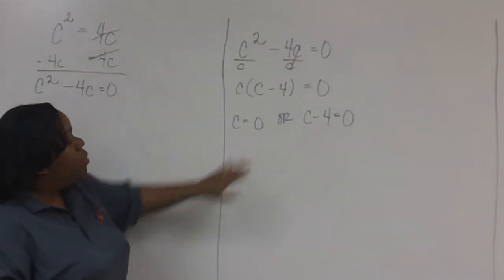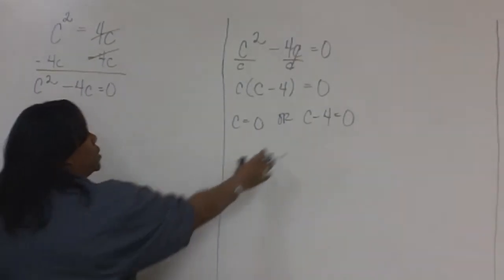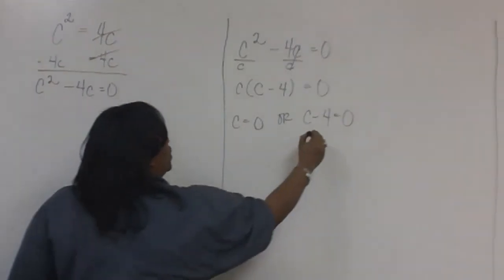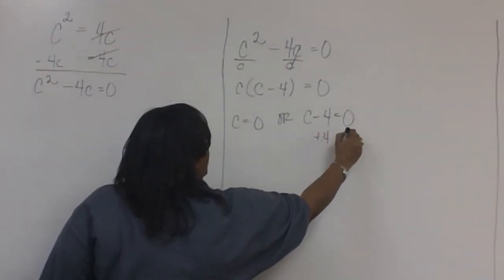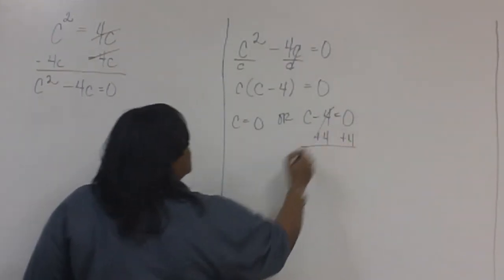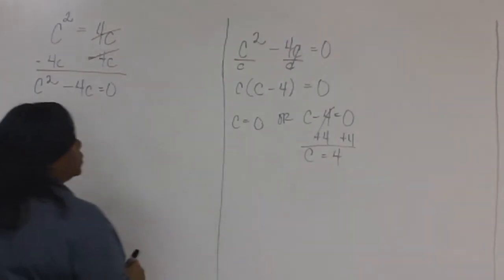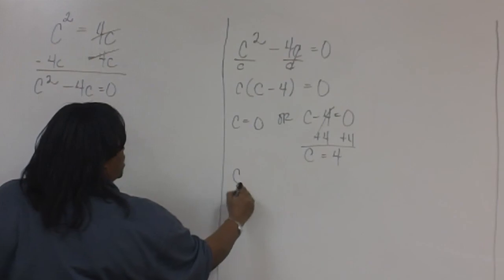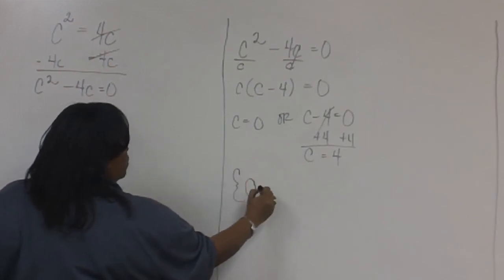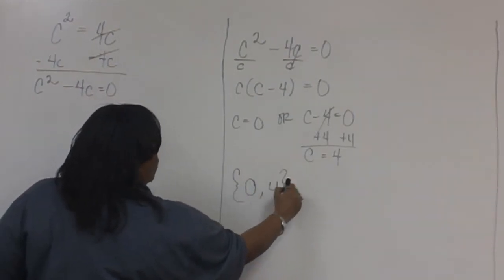So we've already solved one equation. To solve the other equation, we'll need to add 4 to both sides, and we find that C is equal to 4. So the solution set consists of zero, comma, 4. This is the answer.